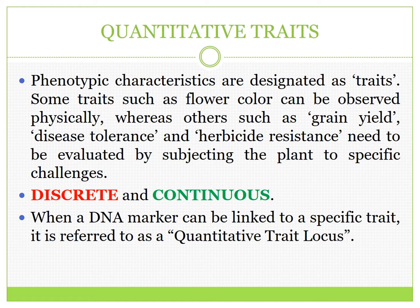Phenotypical characteristics are designated as traits. Some traits such as flower color can be observed physically, whereas others such as grain yield, disease tolerance, and herbicide resistance need to be evaluated by subjecting the plants to specific challenges. Traits can be classified as discrete and continuous. An example of a continuous trait is the variation in the color of a flower based on different hues or shades of pink or red. In the case of discrete traits, the characteristic or phenotype is distinct — for instance, the flower color is either pink or white and there is no intermediate hue.